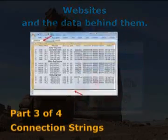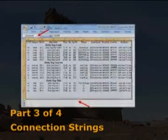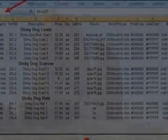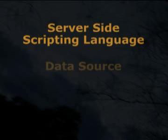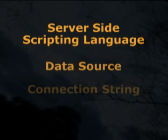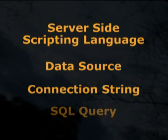To be able to utilize data from a data source within a web page, there are four elements that must work in concert with one another. You must be using a server-side scripting language, a properly formatted data source, the correct connection string, and an SQL query. One without the other yields nothing. So let's explore how all of these elements interact with one another.